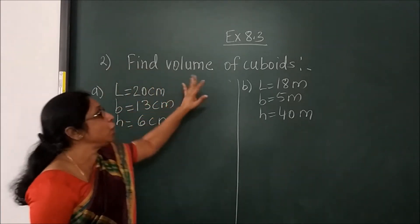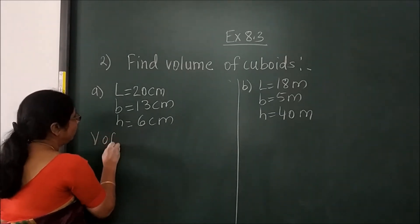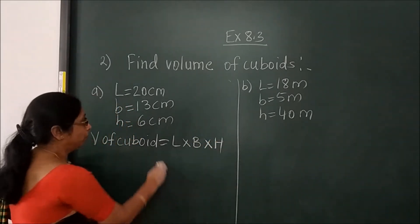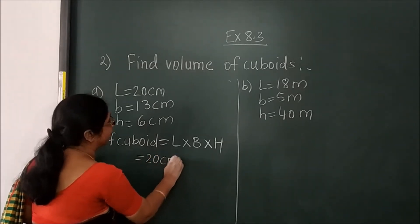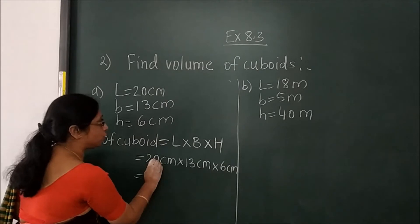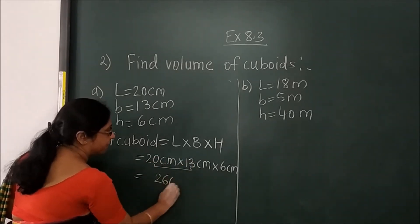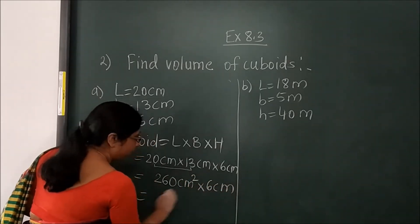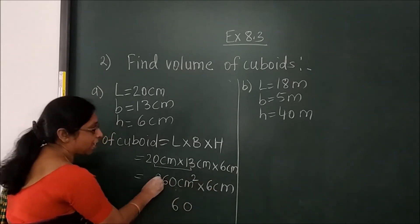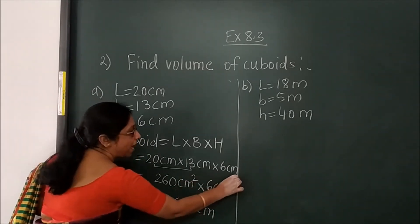Now in exercise 8.3 we will see the volume of a cuboid. To find the volume of a cuboid, you have to use the formula: volume of cuboid equals length into breadth into height. So you will write the formula first and place the values below. Multiply 20 into 13. Here 3 twos are 6. Centimeter appears 2 times plus 1 time, so centimeter cubed — total power 3.